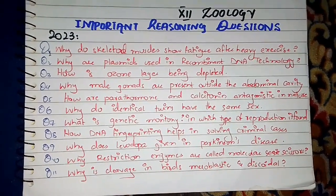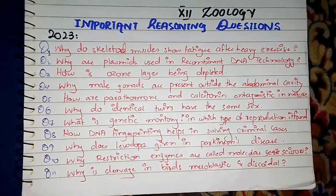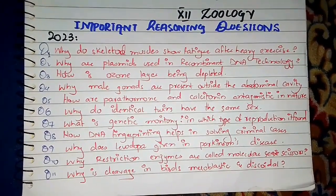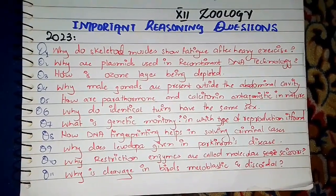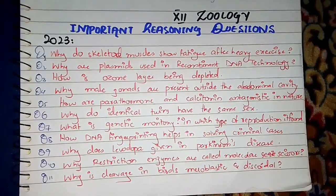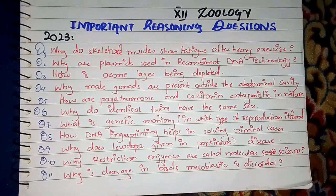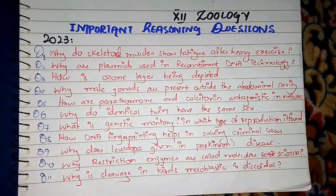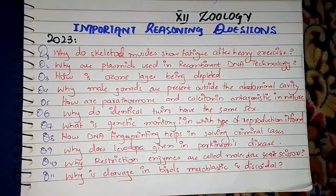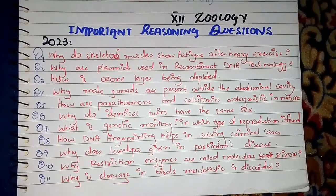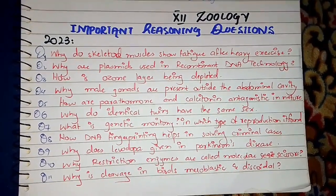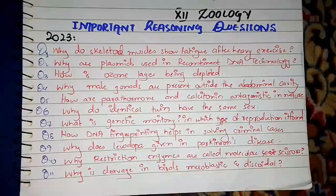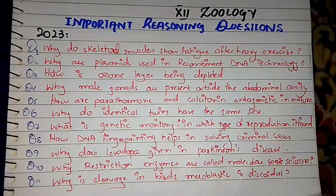Question number 1: Why do skeletal muscles fatigue after heavy exercise? Skeletal muscles fatigue after heavy exercise because in our muscles there is accumulation of a toxic substance which we call lactic acid. This toxic substance produces a tiring effect which we call muscle fatigue.